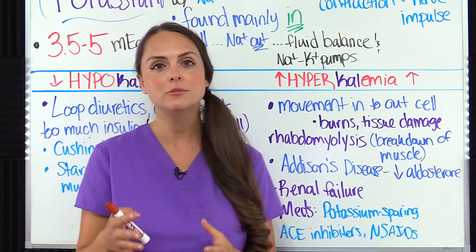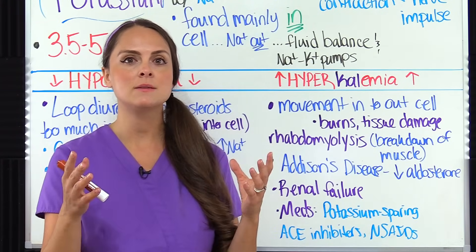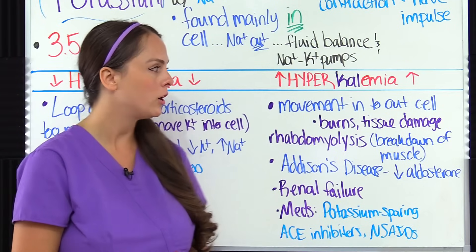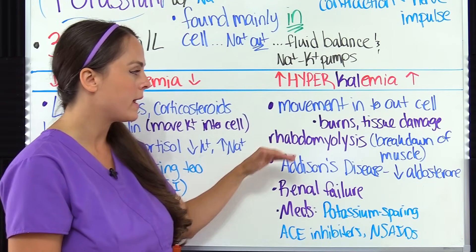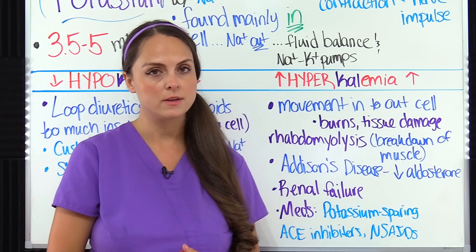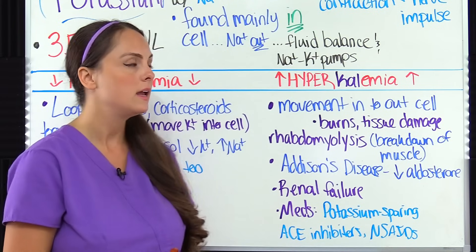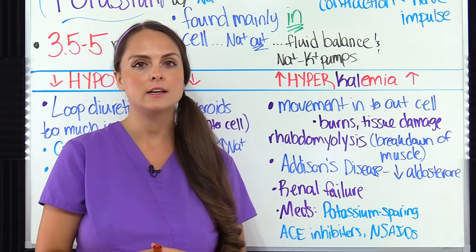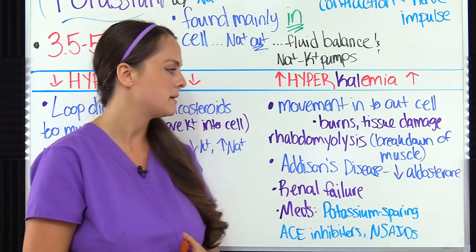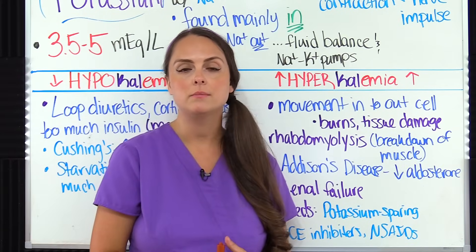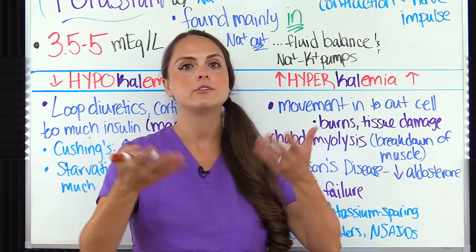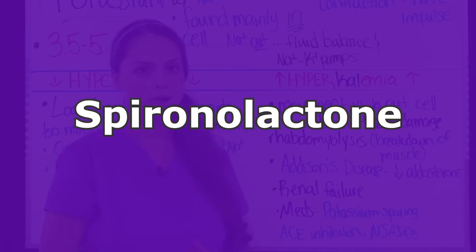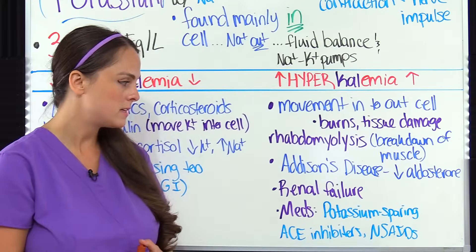What can cause hyperkalemia — too much potassium in the blood? Anything that causes potassium inside the cell to move outside into the blood will raise blood levels. Severe burns can cause this, along with tissue damage such as rhabdomyolysis, where the breakdown of muscle tissue leaks potassium into the blood. Addison's disease — decreased aldosterone — causes the body to excrete sodium while keeping potassium. Renal failure is a big one: patients with elevated BUN and creatinine will often have very high potassium and may need dialysis. Medications such as potassium-sparing diuretics like spironolactone, ACE inhibitors, and NSAIDs can also cause this.